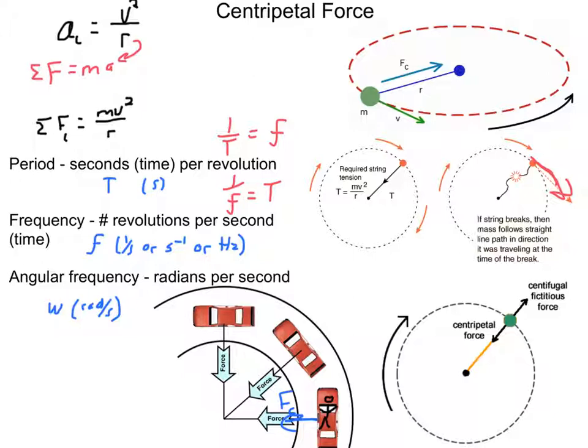Last definition I need to give you is angular frequency. Now angular frequency will become very important as we move forward. It's how many radians, or how much angle you clip off in one second, how many radians per second. Thus, Greek letter omega for it, unit of radians per second. And the equation for that is omega equals 2π times the frequency. Of course, knowing that frequency and period are inverses, you could also say omega equals 2π over the period.